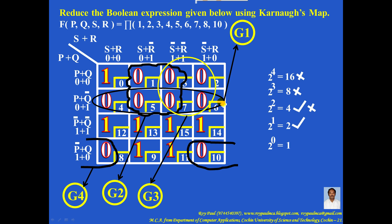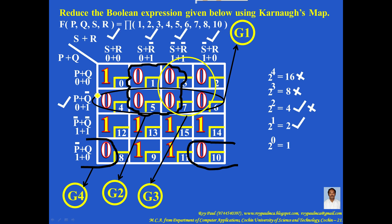Now let me simplify the various groups. For G1, mark the left-hand side and top for every zero in the group. Left-hand side has only one term — take it as is. On the top, S is not a stable variable because it changes state, and R is also not stable. So for G1, the simplified form is P plus Q complement.